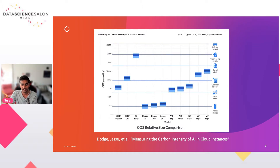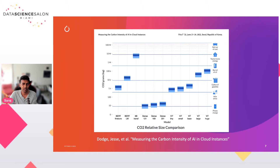This is from a recent study published at the ACM conference a few months back. What stands out is that the carbon emissions from training a 6-billion-parameter transformer model is equivalent to the average U.S. household's energy consumption throughout an entire year. The kicker is that they didn't even train the entire model — they stopped very early at about 13% of the training cycle. So a partially trained model consumes more energy than an average U.S. household.